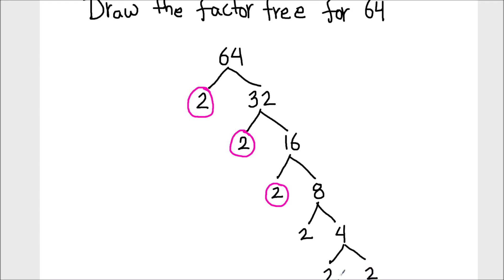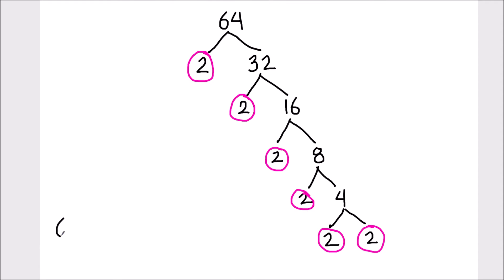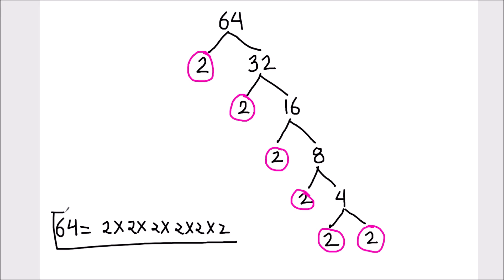So now we have all the prime numbers. We are going to circle all the prime factors. These are all the prime factors of number 64. 64 equals 2 times 2 times 2 times 2 times 2 times 2. This is how we draw a factor tree for any number.